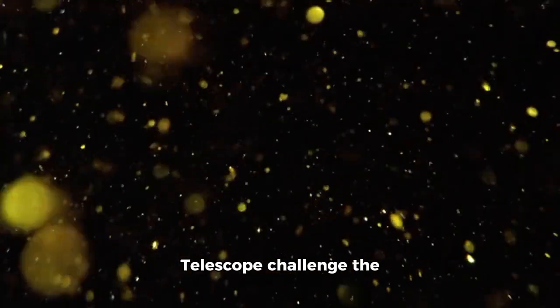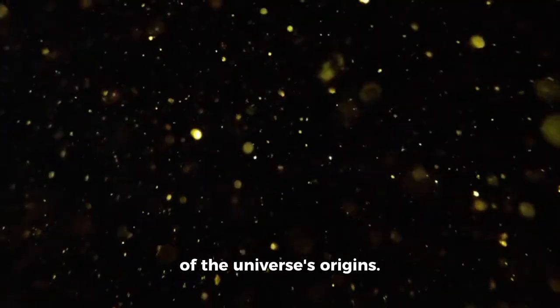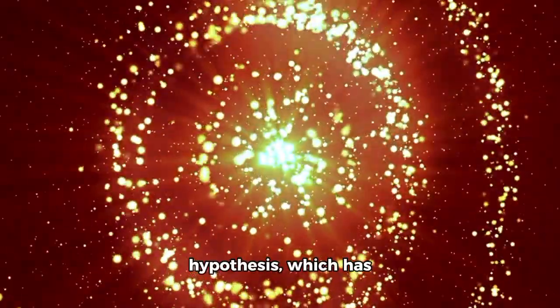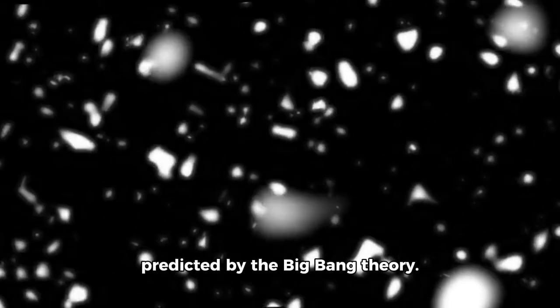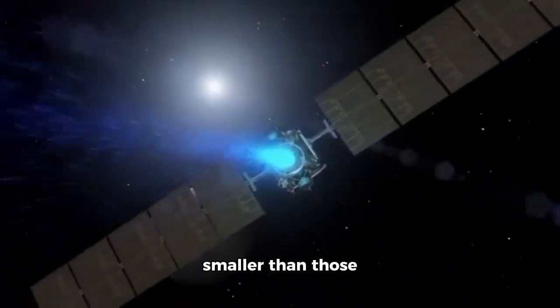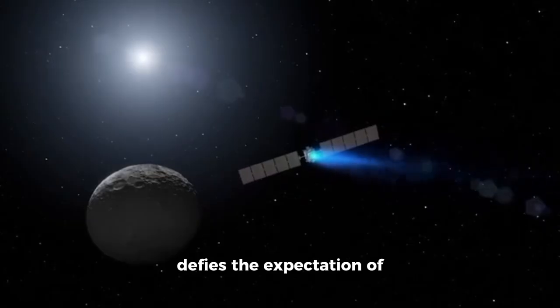The photos captured by the James Webb Telescope challenge the discovery of 750 galaxies and the current understanding of the universe's origins. Specifically, these images directly contradict the Big Bang Hypothesis, which has long been viewed as an unquestionable truth by cosmologists. The galaxies shown in the images appear to be significantly smaller, smoother, older, and more numerous than what was predicted by the Big Bang Theory. Notably, these galaxies are two to three times smaller than those observed by the Hubble Space Telescope, which defies the expectation of an expanding universe.